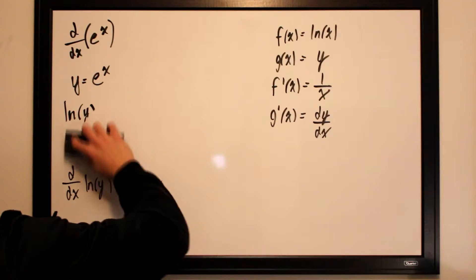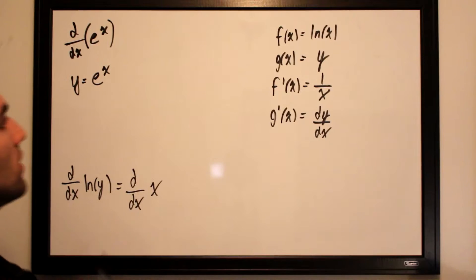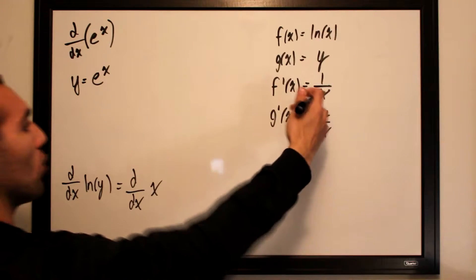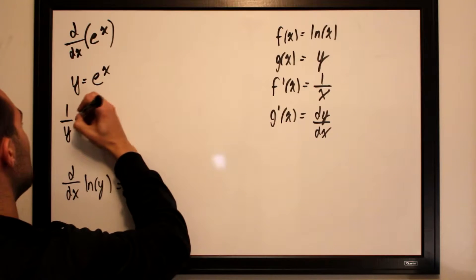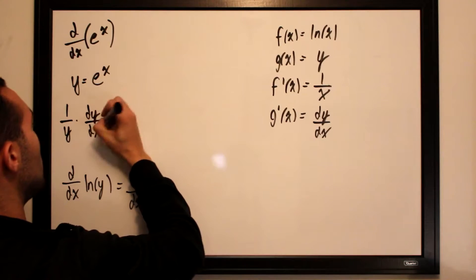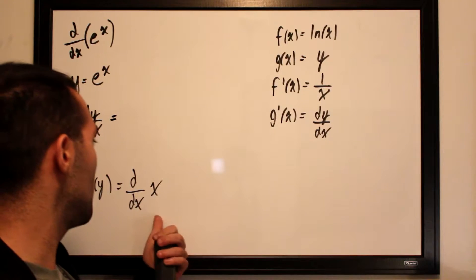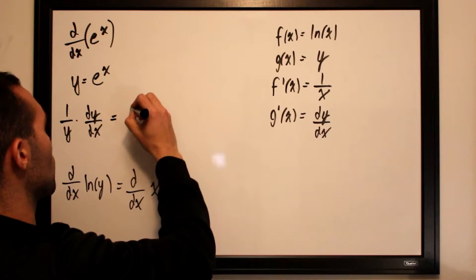Let's go ahead and write that down. This will become 1 over y multiplied by dy/dx. 1 over y times dy/dx is equal to the derivative of x, which is just 1.